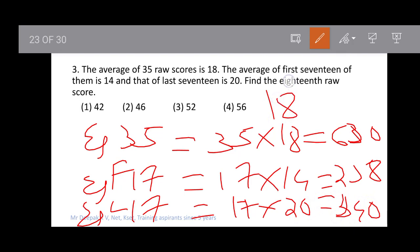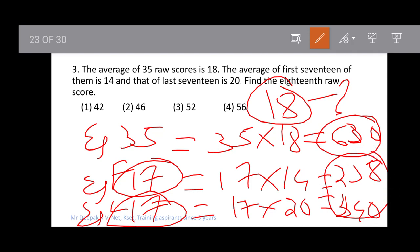What is the 18th number? This is easy to calculate. We have the sum of all 35 (which is 630), the sum of the first 17 (238), and the sum of the last 17 (340). If we add the first and last 17 and subtract from 630, we get the 18th number.